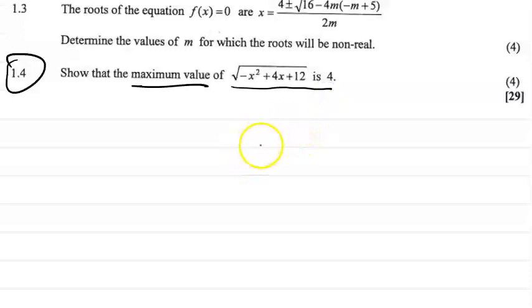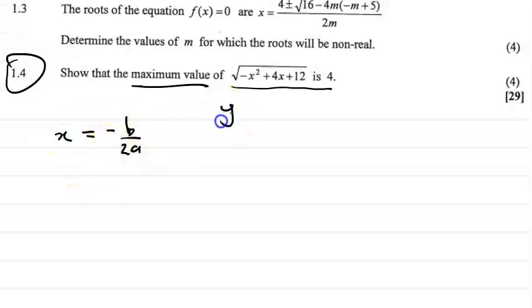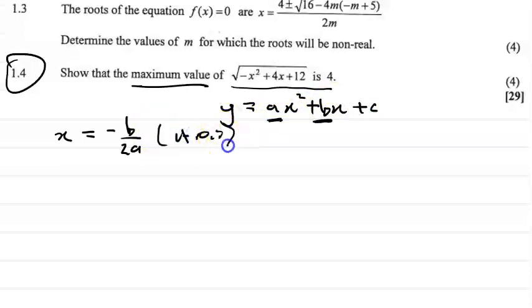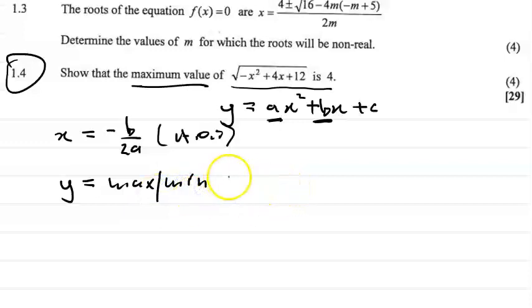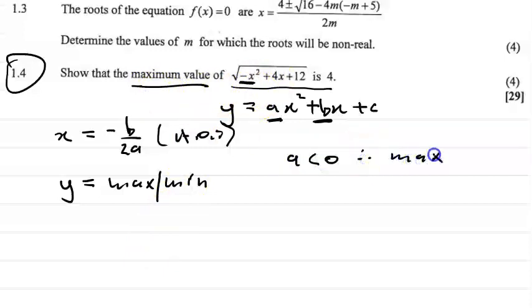What is a maximum or minimum value? In a quadratic equation or a parabola, you can find the maximum or minimum value using the formula minus b over 2a, from your quadratic equation y equals ax squared plus bx plus c. This gives you the axis of symmetry — the x-value of your turning point. You substitute that x-value into your original equation to find the maximum or minimum y-value. Remember: if a is less than zero you get a maximum value; if a is greater than zero you get a minimum value.